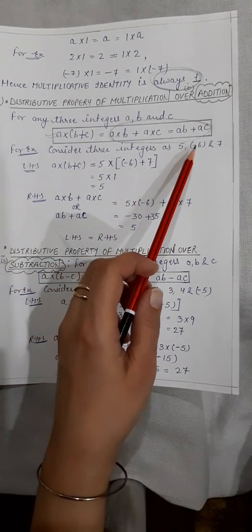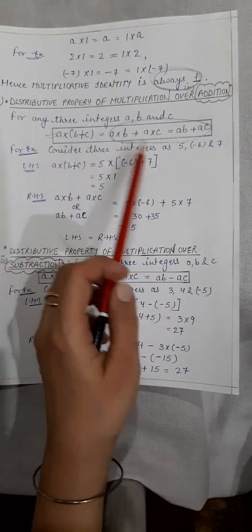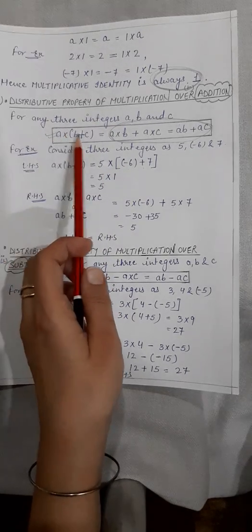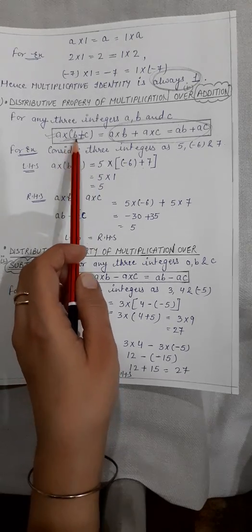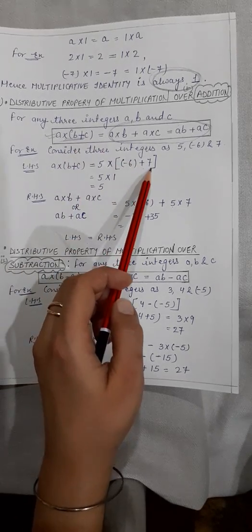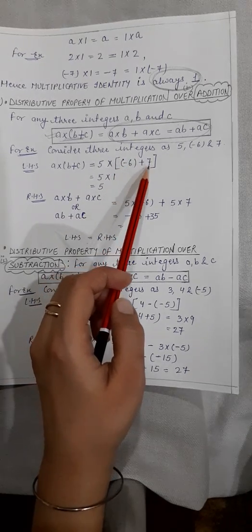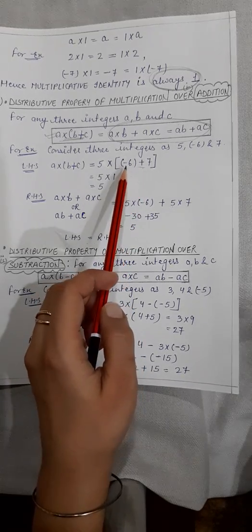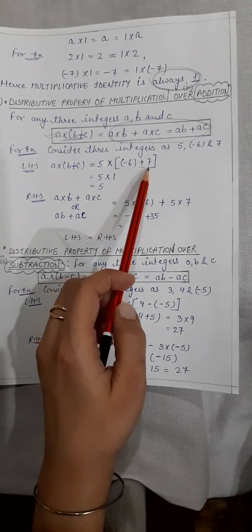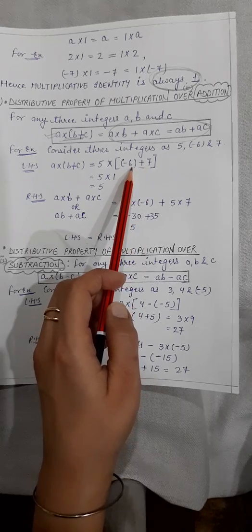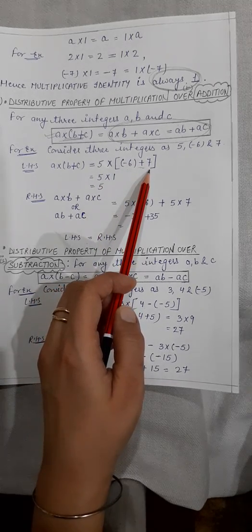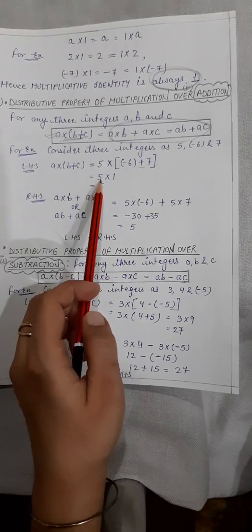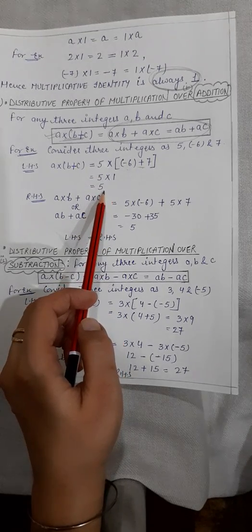For example, consider three integers 5, minus 6, and 7. Take a as 5, b as minus 6, and c as 7. For the left-hand side: 5 into (minus 6 plus 7). Solve by addition of integers — different signs, so subtract: 7 minus 6 is 1, and the sign is positive because 7 is greater. So 5 into 1 is 5.